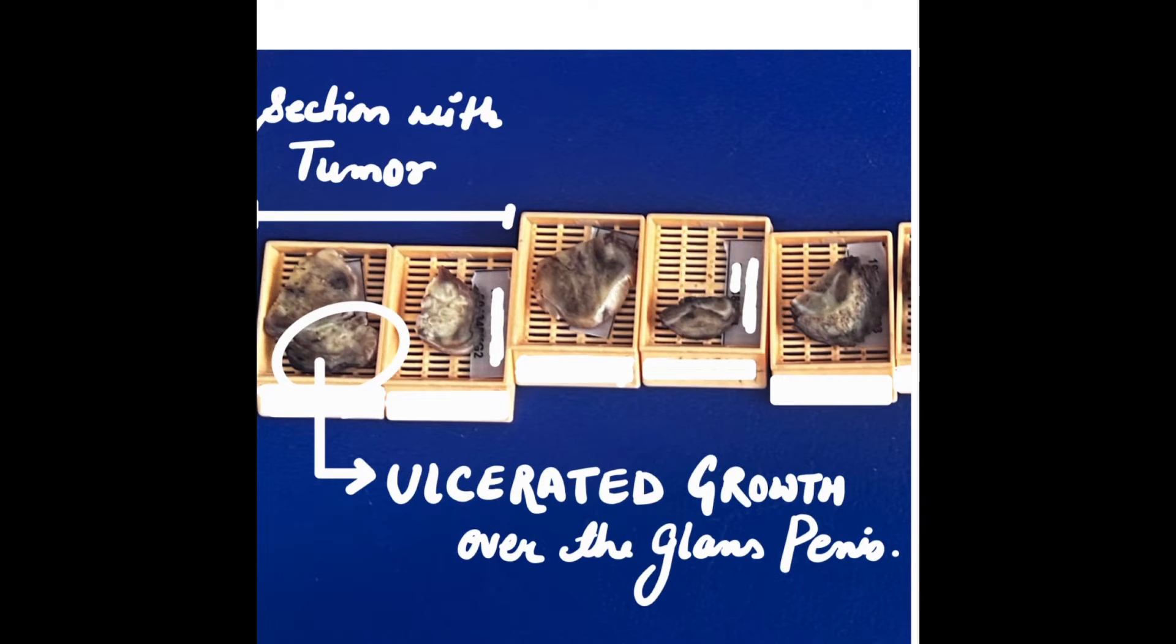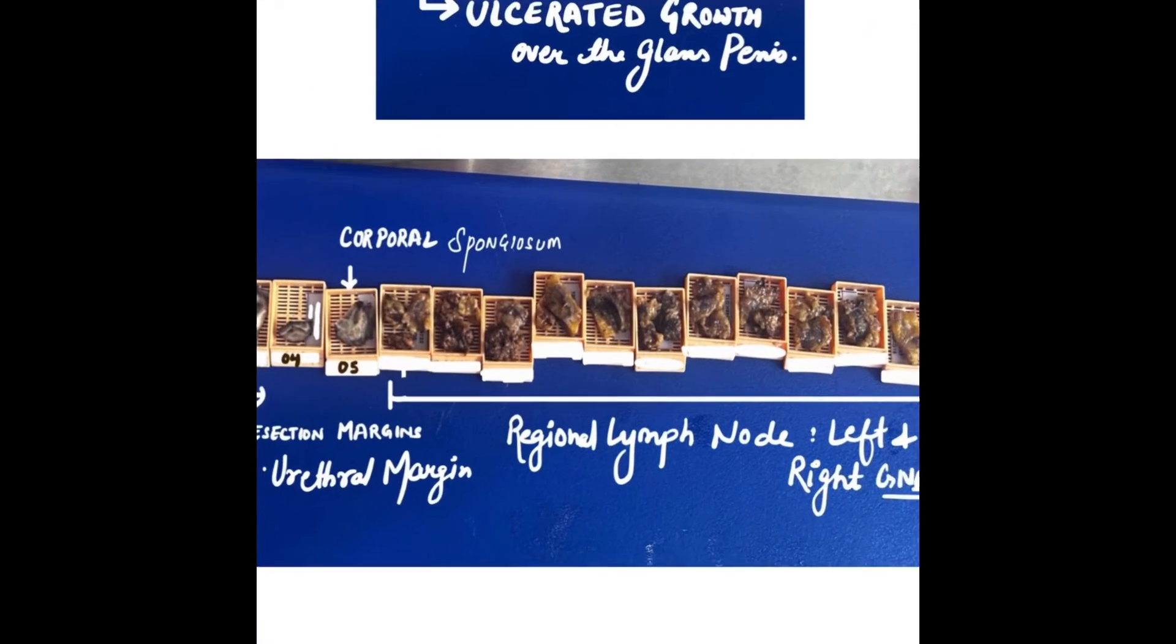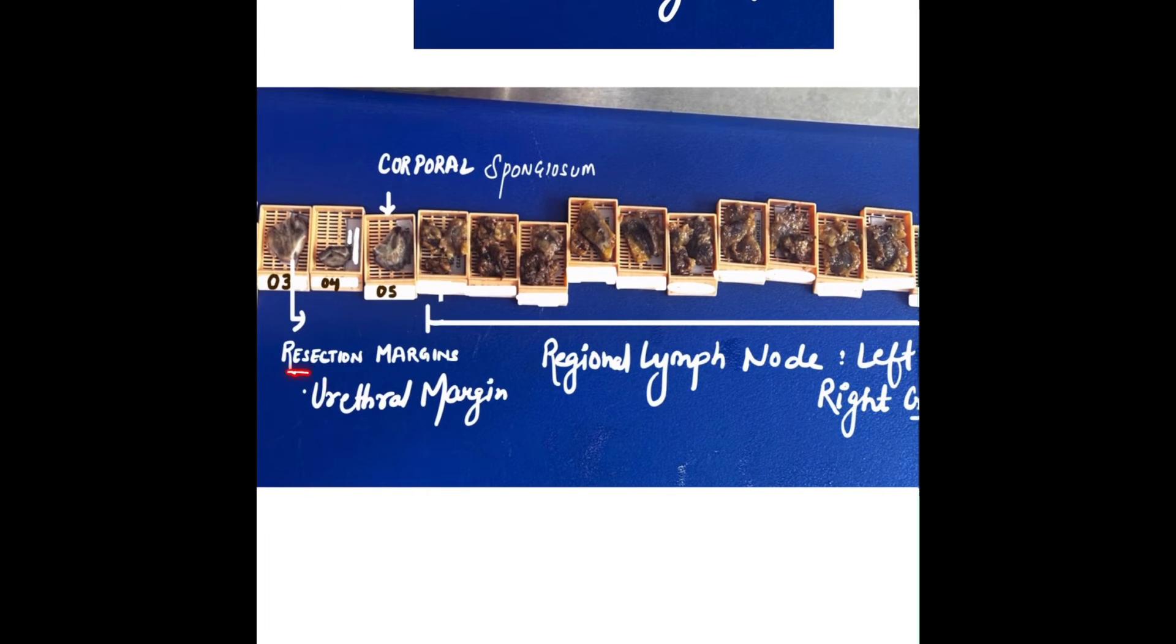Cassettes one and two are sections with the tumor. Here it is—the ulcerated growth over the glans penis. I mentioned the resection margins in cassettes three, four, and five.